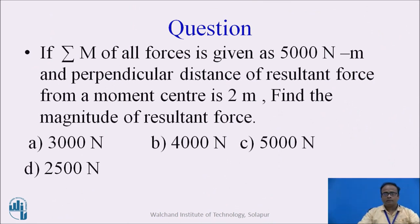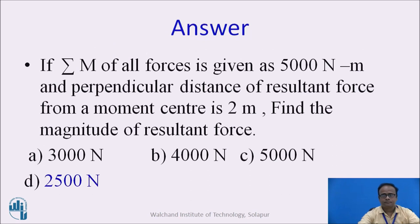Here we are supposed to pause the video and answer this question. The answer: if the summation of moments of all forces is given as 5000 N·m and the perpendicular distance of the resultant force from the moment center is 2 m, find the magnitude of the resultant force. This works out to be 2500 N.